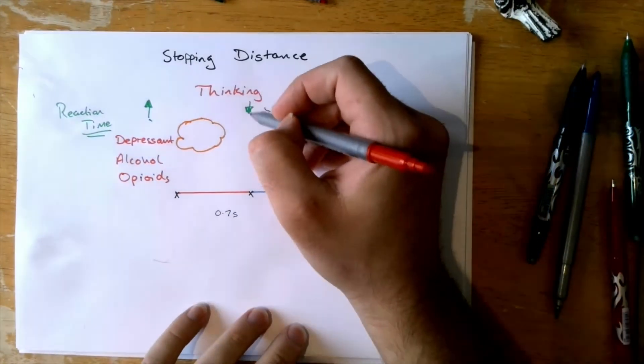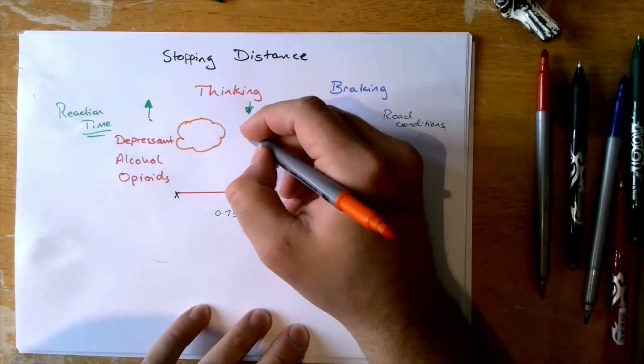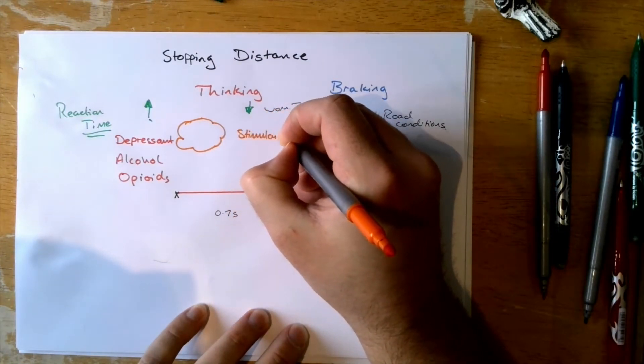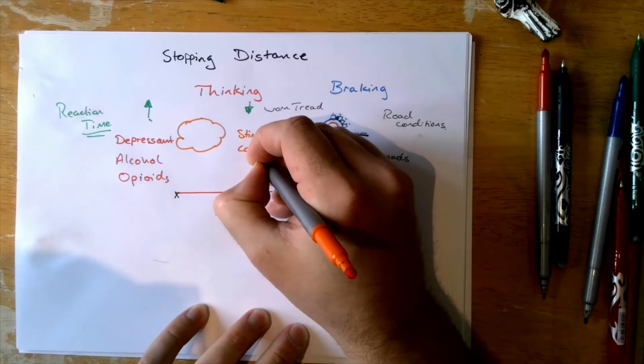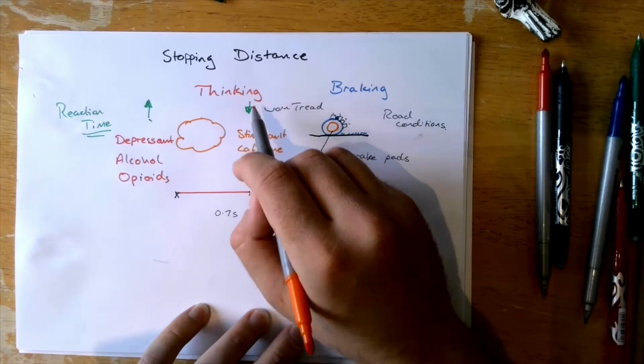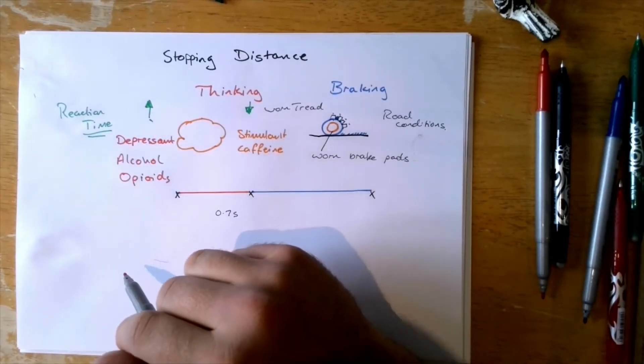What will decrease the thinking time? Any kind of a stimulant. So something like caffeine. So by drinking caffeine you decrease the thinking time and increase your reaction time.